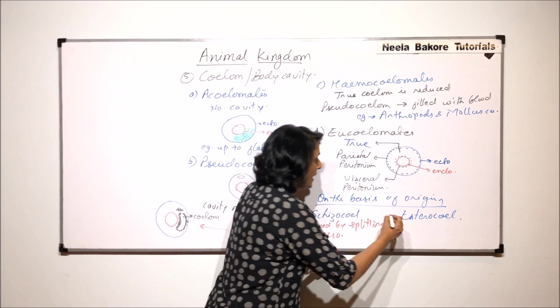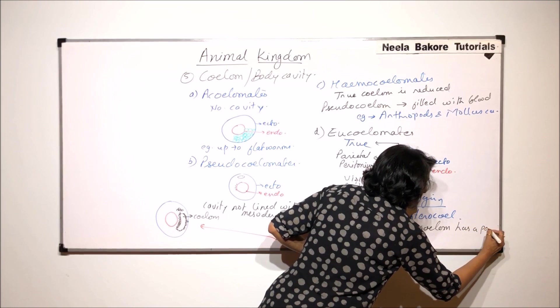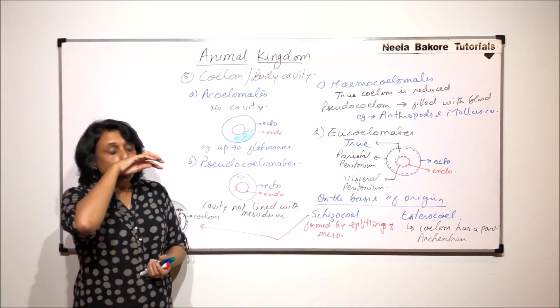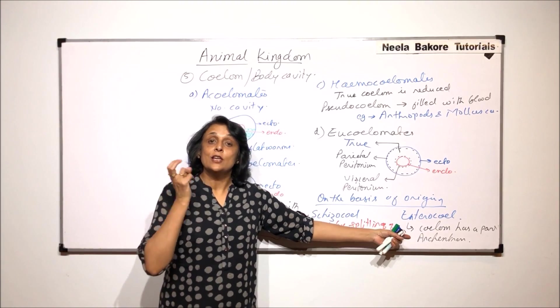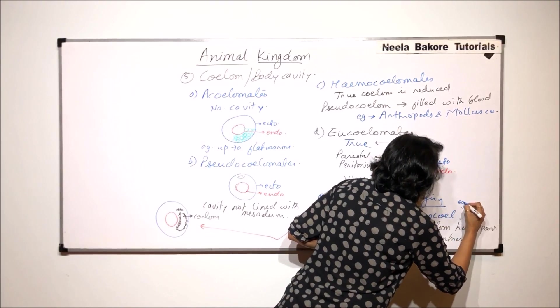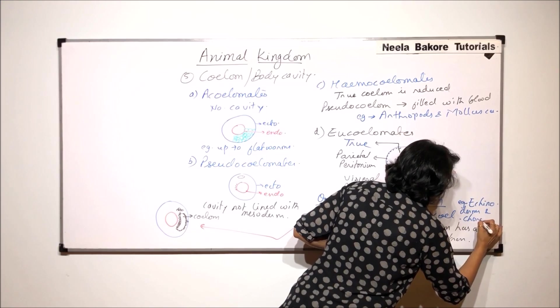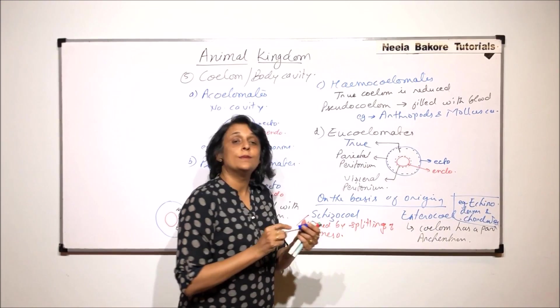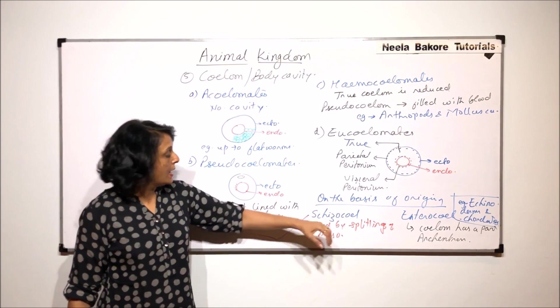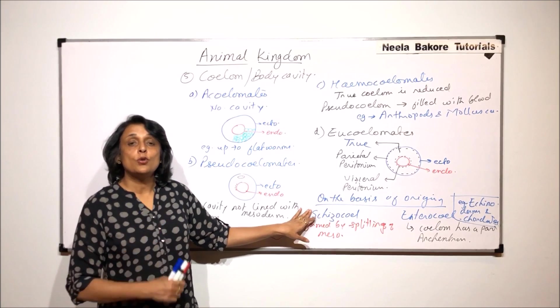And enterocoelom is the cavity, coelom has a part of archenteron. Archenteron is the cavity of gastrula. So it has a part of that which is included in the body cavity, and then it is known as enterocoelom. Enterocoelom is seen in case of echinoderms and chordates. That means, again, echinoderms and chordates are closest according to the evolution, how the structures have developed.